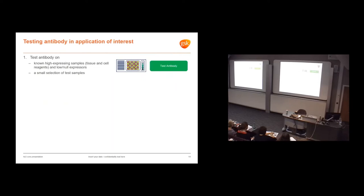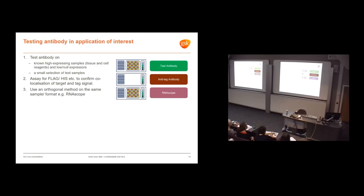Once we've got the cell lines, we use them on the assay of interest. These are FFPE cell lines pelleted into blocks, and this is a tissue microarray with healthy and diseased tissue. We run the test antibody across that panel of tissue and reagents, run anti-tag antibodies so we can co-localize the signal from the tag with the test antibody, and use RNA scope to understand protein and RNA localization. These three things allow us to understand sensitivity and specificity of the assay.